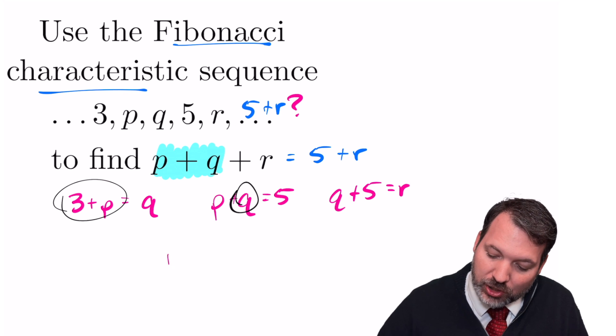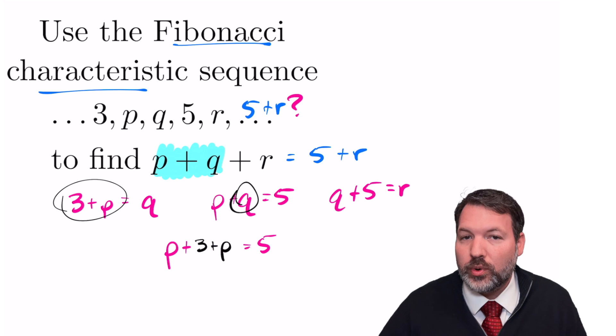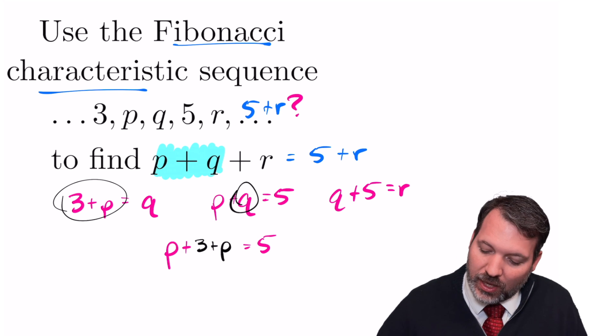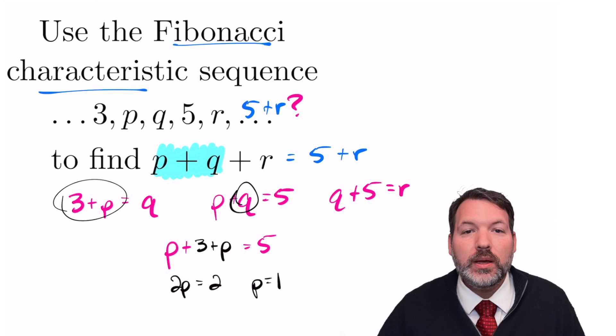So this second equation, p plus q equals 5, we can actually rewrite as p plus 3 plus p equals 5, which then gives us that 2p must be equal to 2, and therefore p is 1.